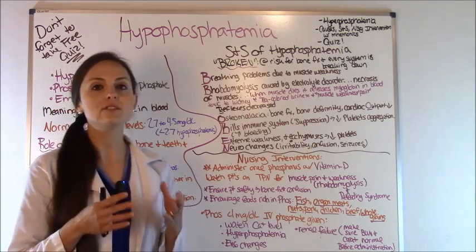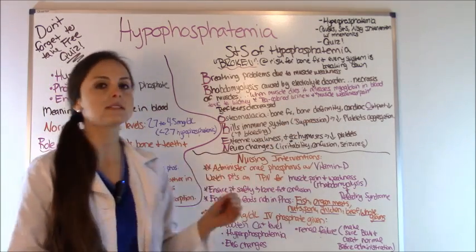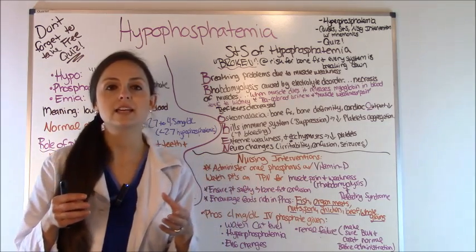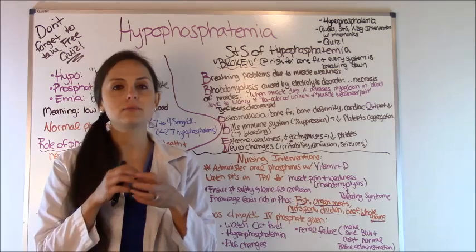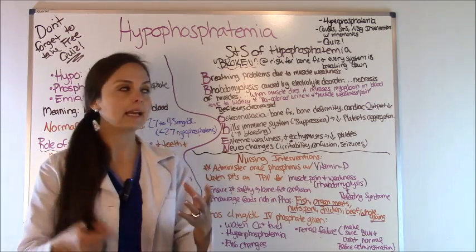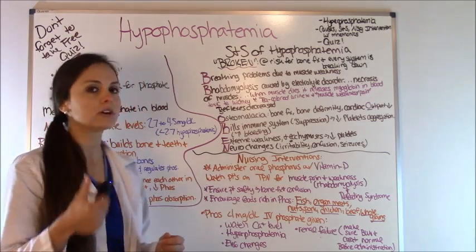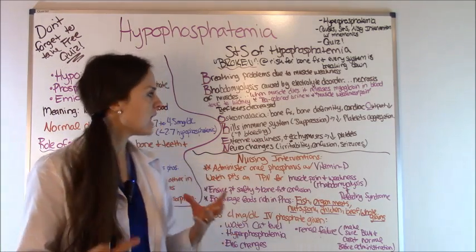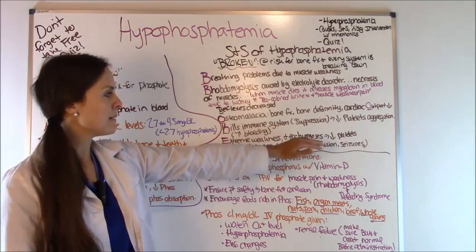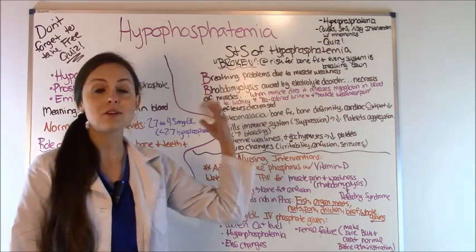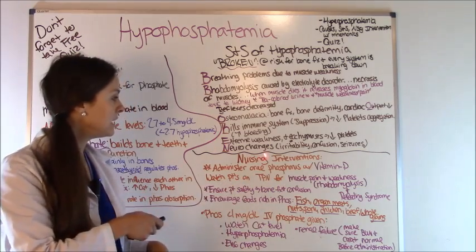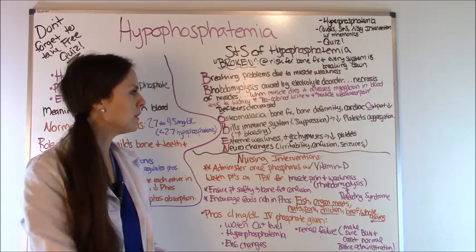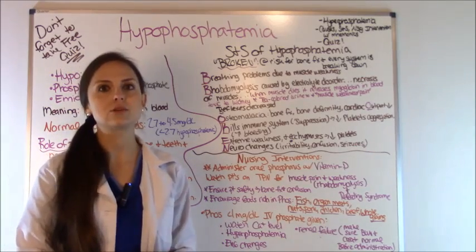K is for killed immune system — low phosphate suppresses the immune system, causing decreased platelet aggregation. Platelets help form clots to prevent bleeding, so you'll see increased signs of bleeding in this patient. E is for extreme weakness — they will be weak, tired, and may have ecchymosis due to those decreased platelets. N is for neurological changes — they will suddenly become confused, irritable, and may have seizures, so put them on seizure precautions.